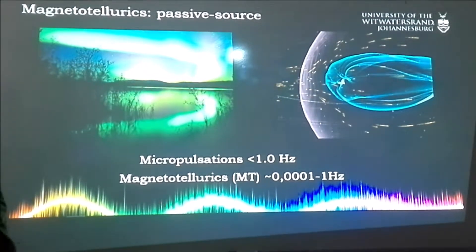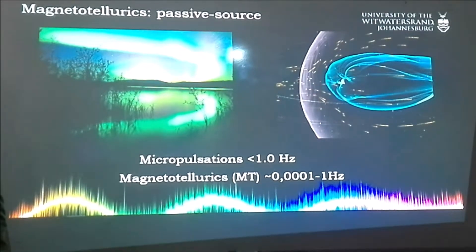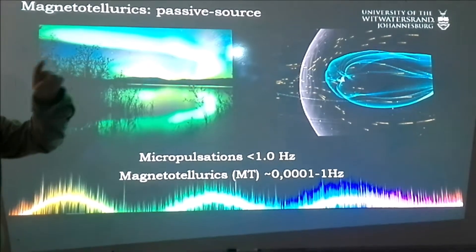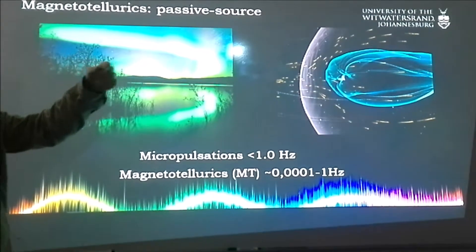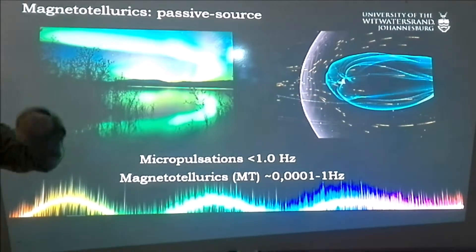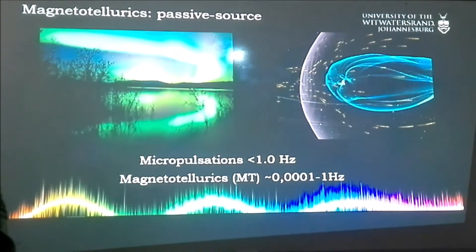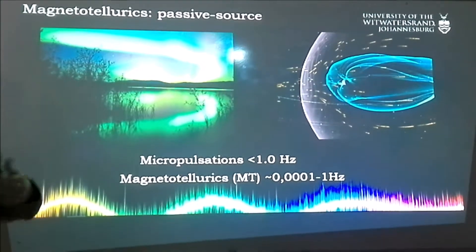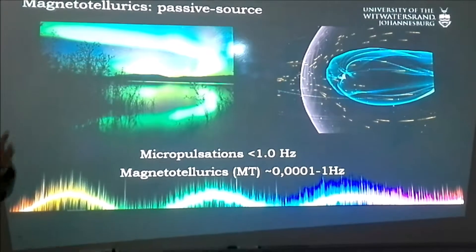This results in a large-scale current system in the ionosphere, and that produces the first sort of source of magnetic field that induces low frequency currents within the ground. And because they are such low frequency, they get a lot deeper.